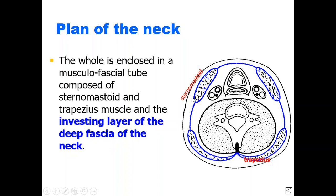When the investing layer reaches a muscle like the sternocleidomastoid, it splits into two laminae — an external and an internal lamina — to enclose the muscle. When it reaches the posterior border of the muscle it reunites as a single layer, then splits again to enclose the trapezius muscle, and fuses to the ligamentum nuchae, which is one of the points that fixes the fascia of the neck. The investing layer is the outer layer of the deep cervical fascia and gives the neck its contour.